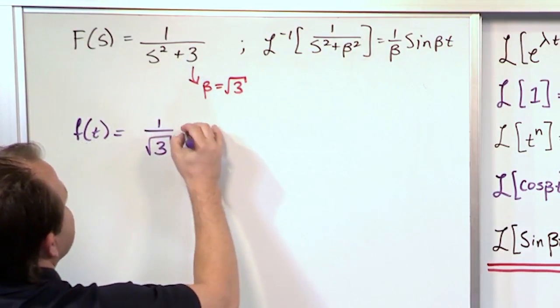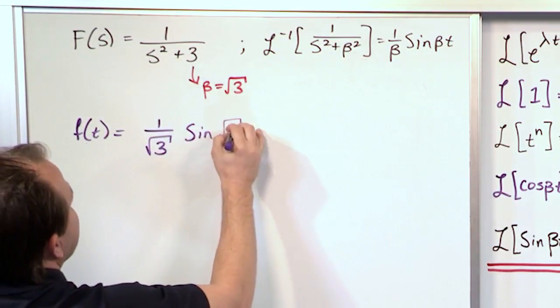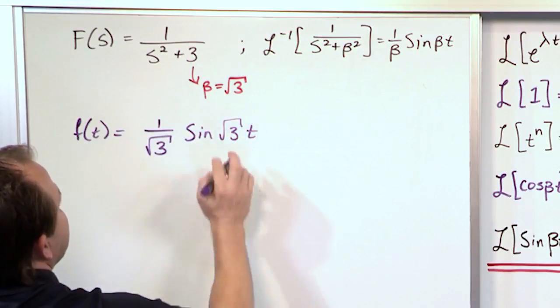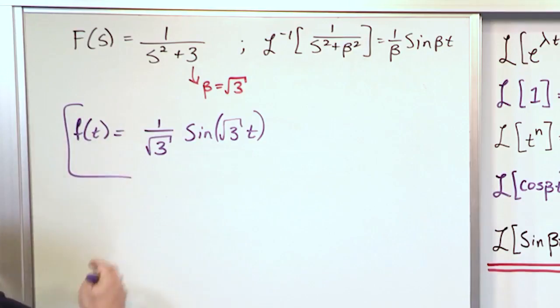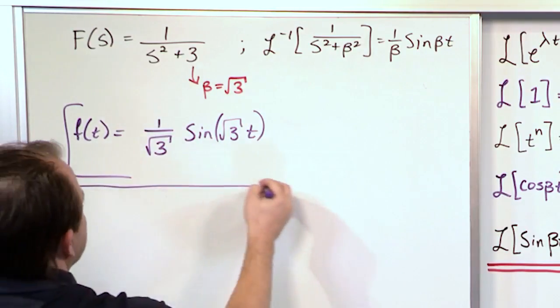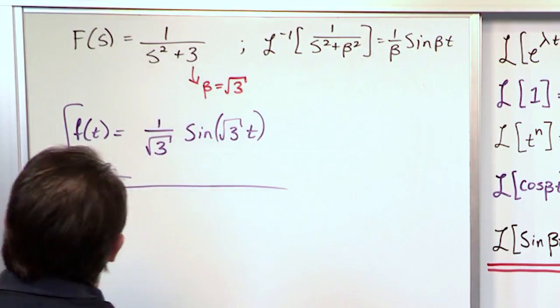And you can put some parentheses here to show that that's all inside of there. And this is the answer, 1 over square root of 3, sine of square root of 3 times t. Again, we're just comparing it to what we see over there and going accordingly. Now let's do the next problem here.